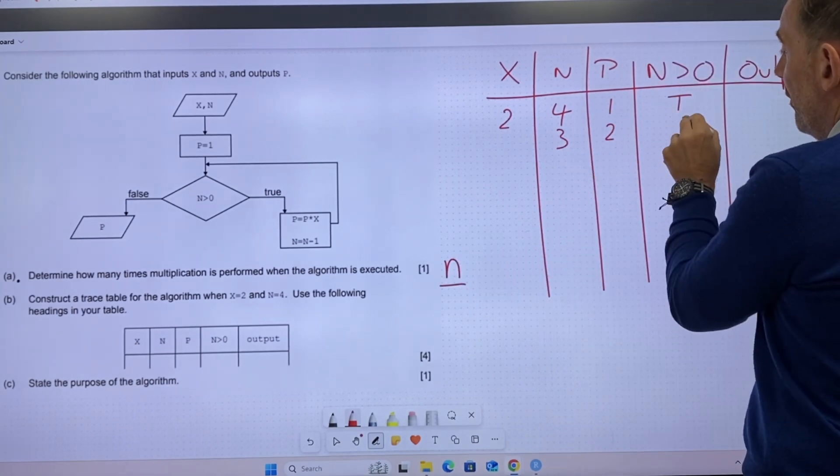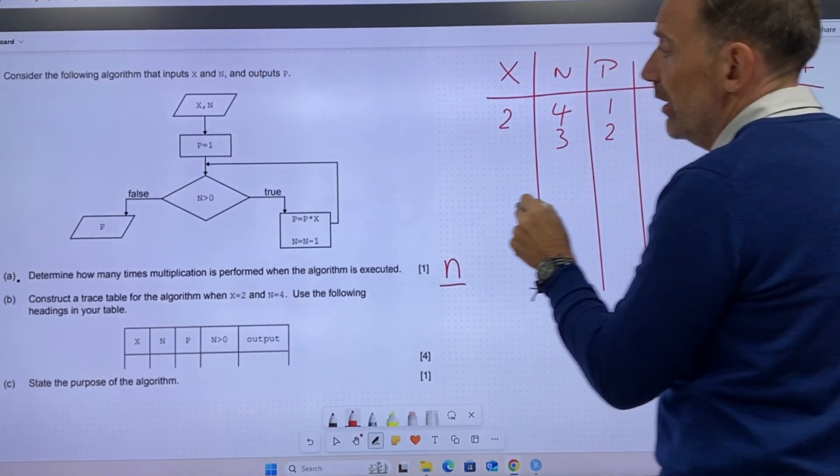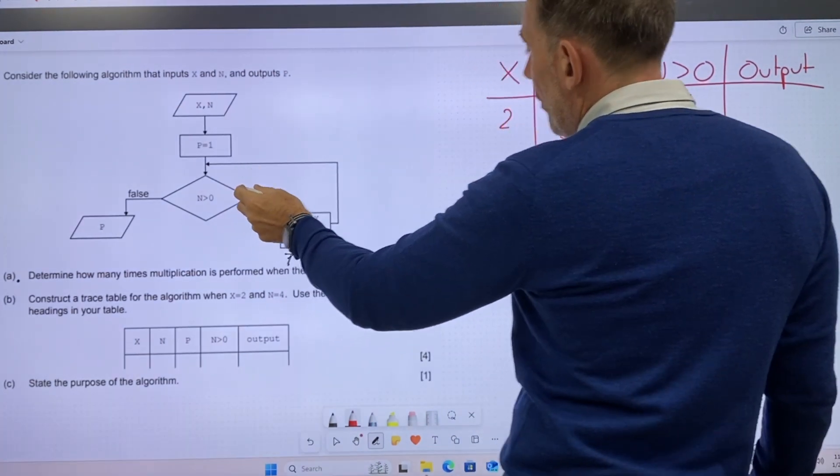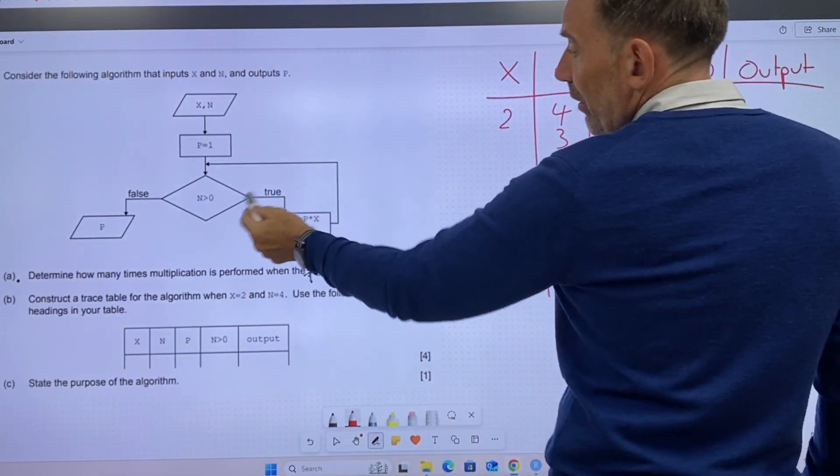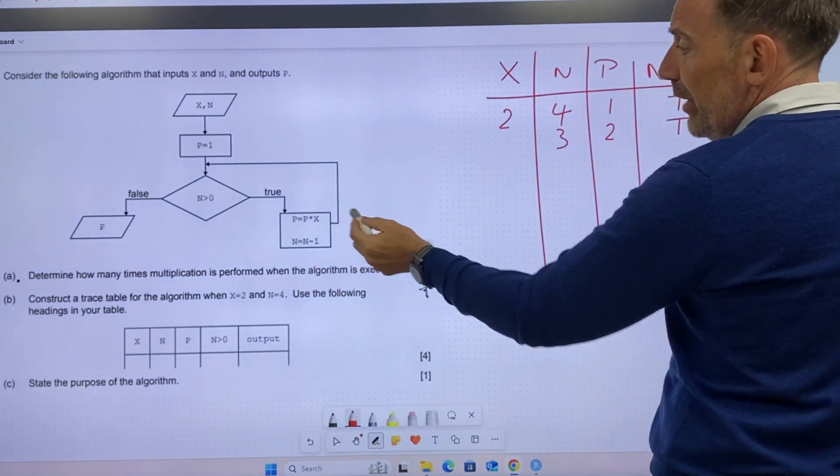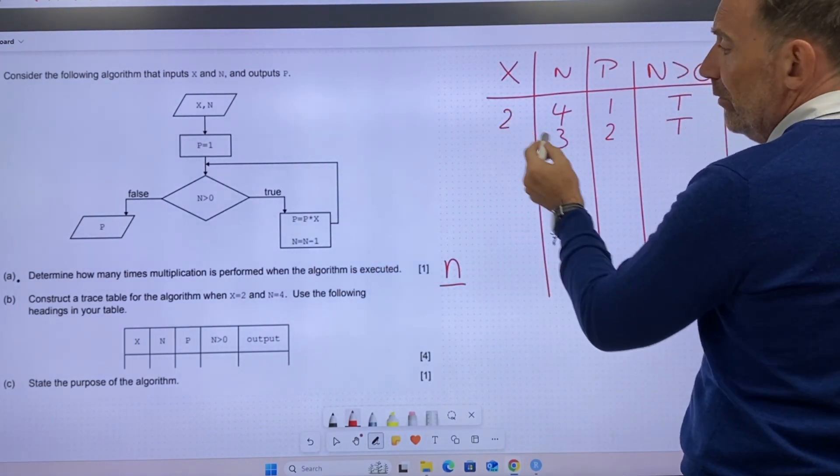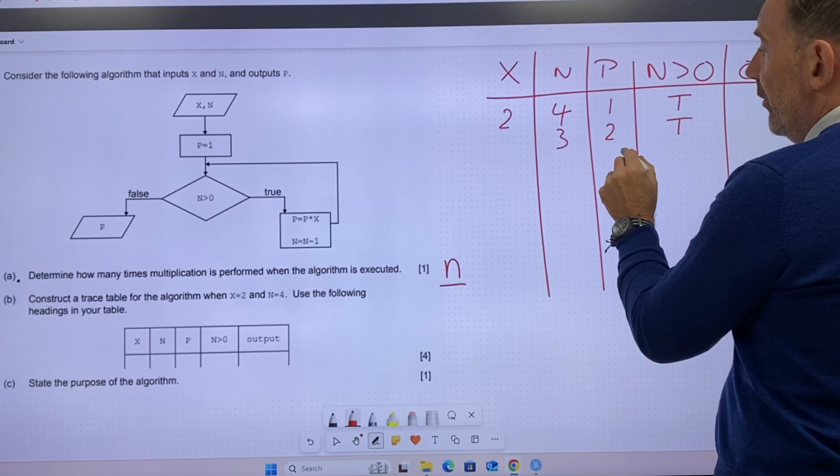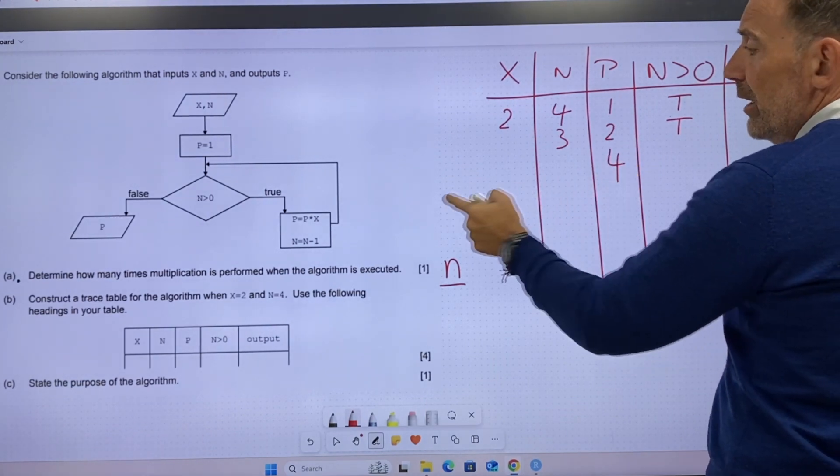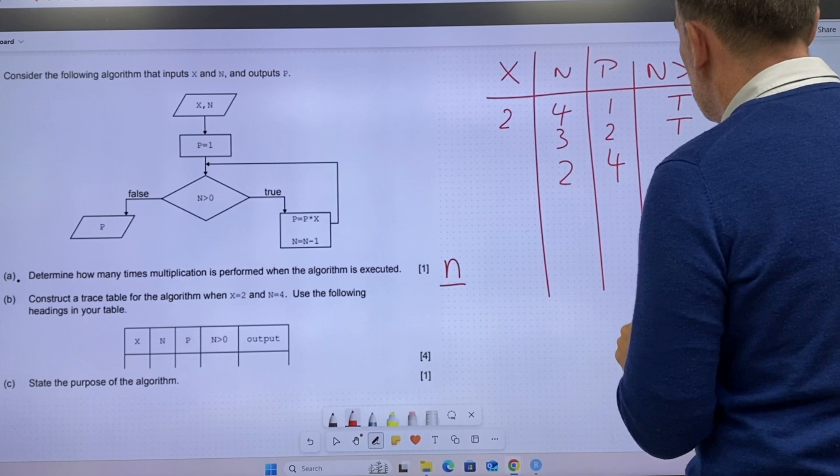N is still greater than zero. Well, that's true. Now we're going back around again. So n is still greater than zero. P equals p times x. Two times two is four. N equals n minus one, so that's two. And is n still? So that's true.